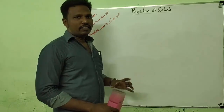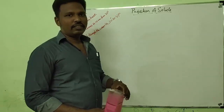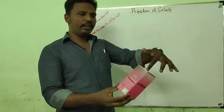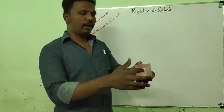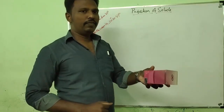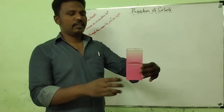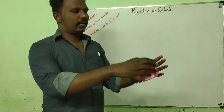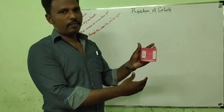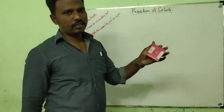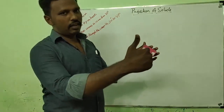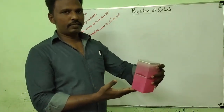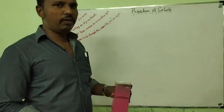Welcome to the class on projection of solids. In solids, generally two types of inclinations are there: one is axis inclination, where the axis of the solid itself is inclined to some angle to HP or VP. Another type is inclination of the base edge, where the base edge may be inclined at some angle to VP or HP. In the second case, the axis is still perpendicular to HP. So two cases are there: axis inclination and base inclination. Let us do a problem involving only the base inclination.